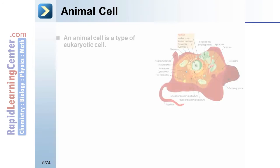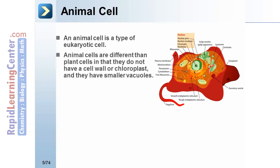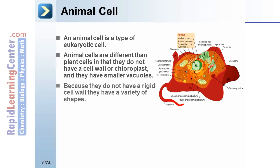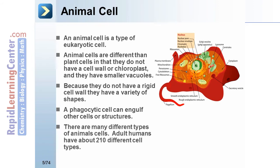Animal cells are a type of eukaryotic cell. They differ from plant cells in that they do not have a cell wall or chloroplast, and they have smaller vacuoles. Because they do not have a rigid cell wall, they have a variety of shapes. A phagocytic cell can engulf other cells or structures. There are many different types of animal cells — adult humans have 210 different cell types.